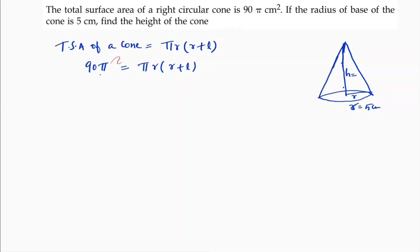and π will cancel. So 90 equals r times (r + l), where radius is 5. So 90 = 5(5 + l). 90 divided by 5 equals 5 + l, giving us 18 = 5 + l. Therefore, slant height l equals 18 - 5, so the slant height is 13 centimeters.